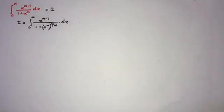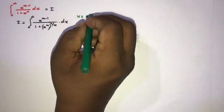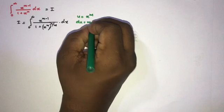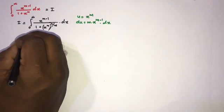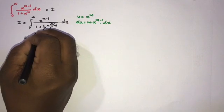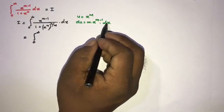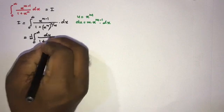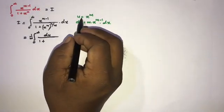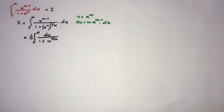Now I am going to take a substitution. If we take u equal to x to the m, then differentiating gives du equal to m times x to the m minus 1 dx. Plugging in, the limits remain 0 to infinity, x to the m minus 1 dx becomes du over m, and x to the m becomes u, giving 1 over m times the integral of du over 1 plus u to the n over m.